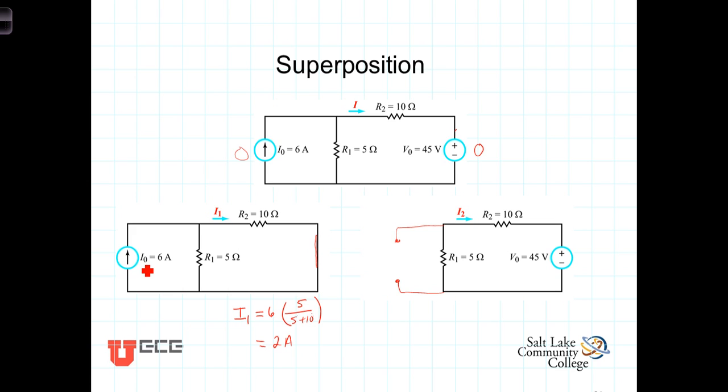Now, let's determine the current over here due to the voltage source. Well, with the current source open circuited, there is no current coming this way. And so any current that's flowing through the 10 ohm resistor will also be flowing through the 5 ohm resistor and those two resistors are in series.